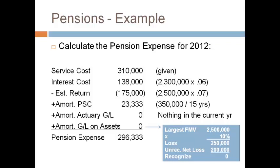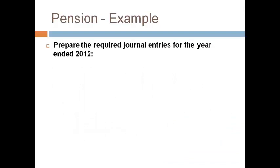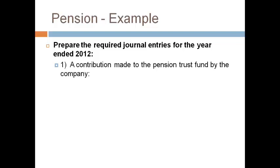Add up all the components to get the total pension expense that will be reported on the income statement. Now let's prepare the four journal entries related to pension expense for 2012. First, record the cash contribution made by the company to the pension trust fund — decrease cash and decrease the liability. This amount was given.